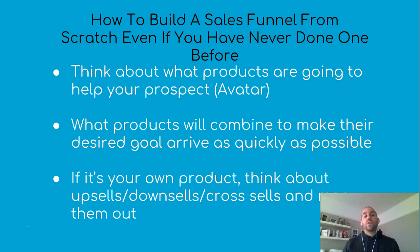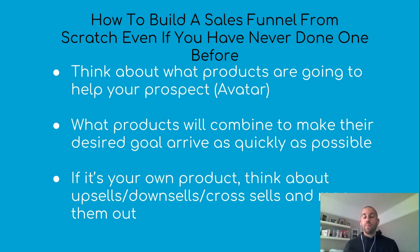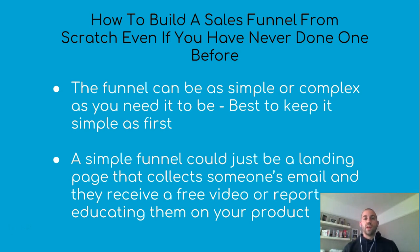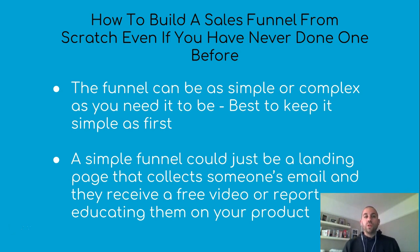If it is your own product, you can start thinking about upsells, downsells, and cross-sells. But since we've been speaking mainly about affiliate marketing, the funnel can be as simple or as complex as it needs to be. When you're starting out, don't overcomplicate things — keep it simple at first, getting them into your funnel with maybe three or four products.